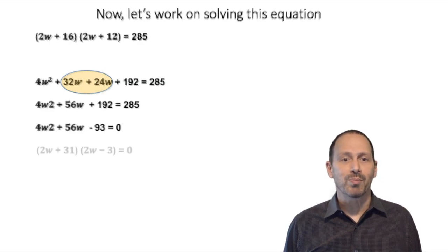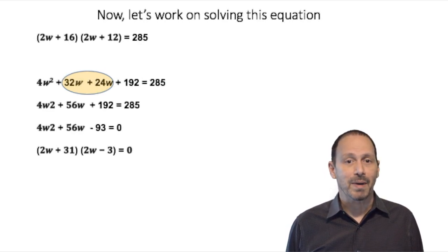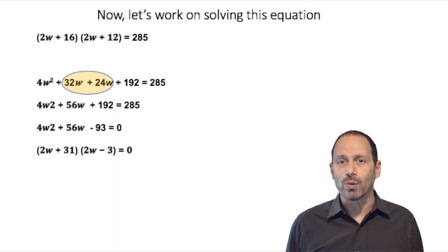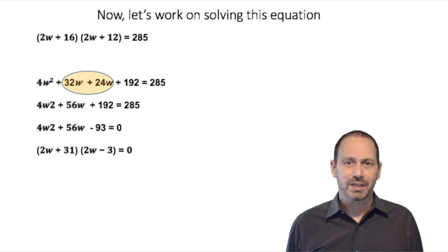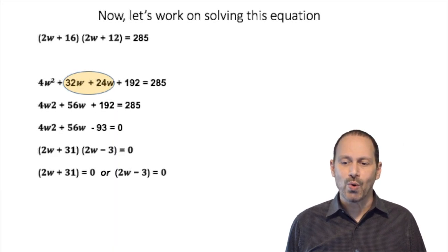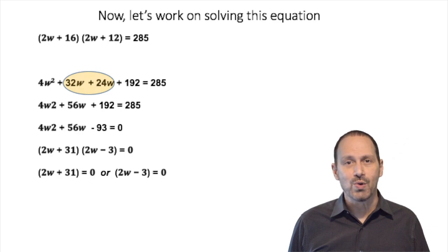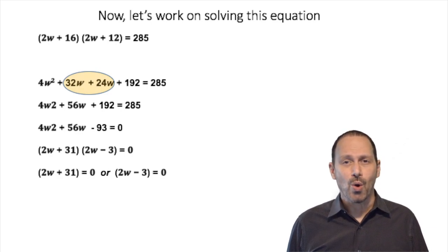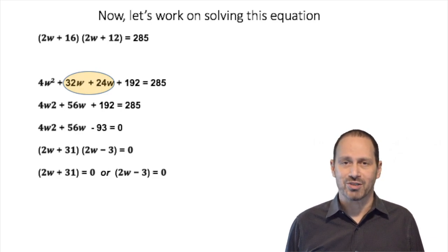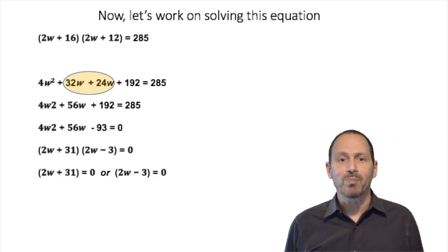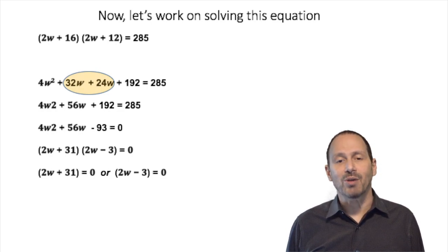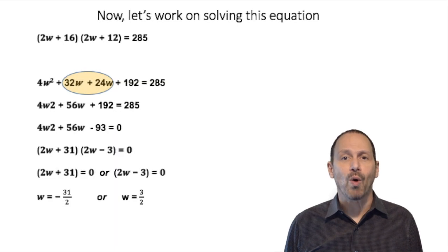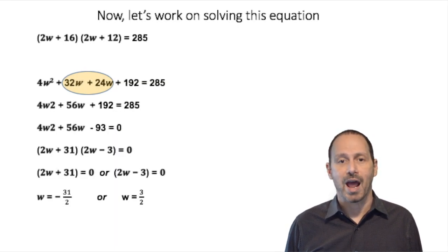Now we can apply the zero property that tells us that when two quantities are being multiplied and you get a product of zero, we can infer that one of them is zero or both of them are zero. So if 2W plus 31 is equal to zero, we get that W is equal to negative 31 halves.